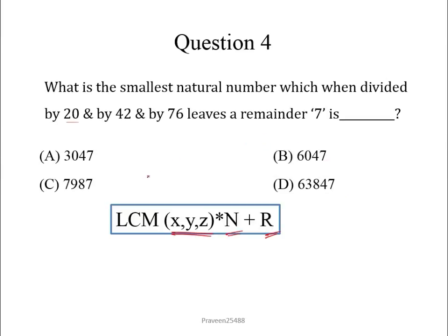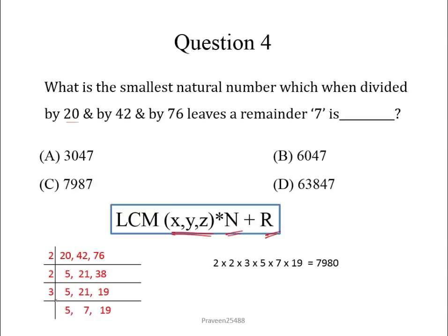LCM I have already calculated here. The LCM of 20, 42 and 76 is 2 x 2 x 3 x 5 x 7 x 19 which equals 7980.